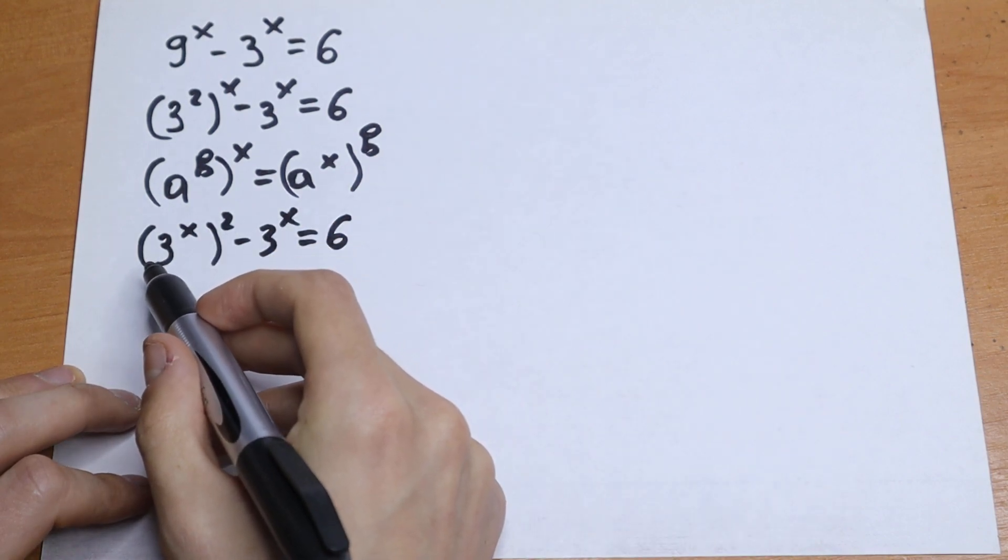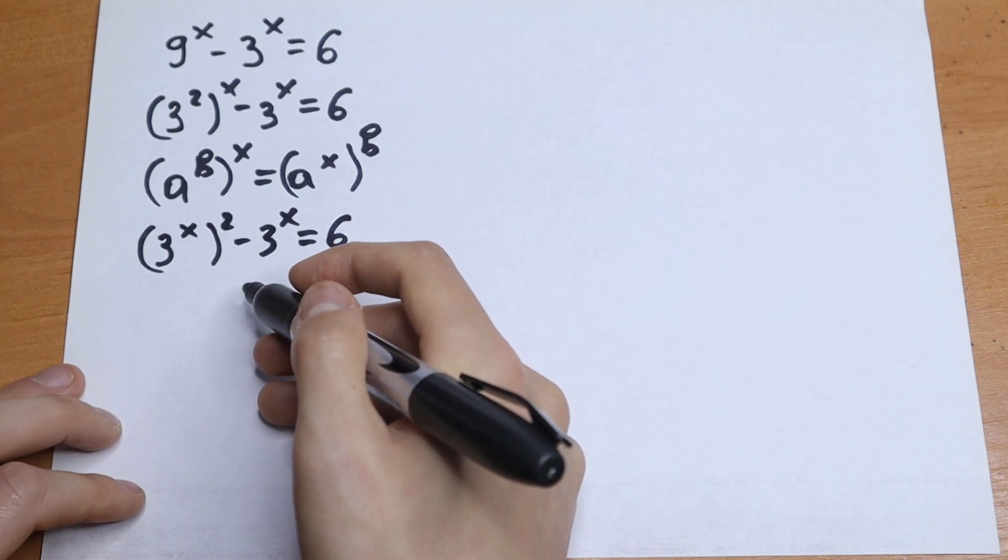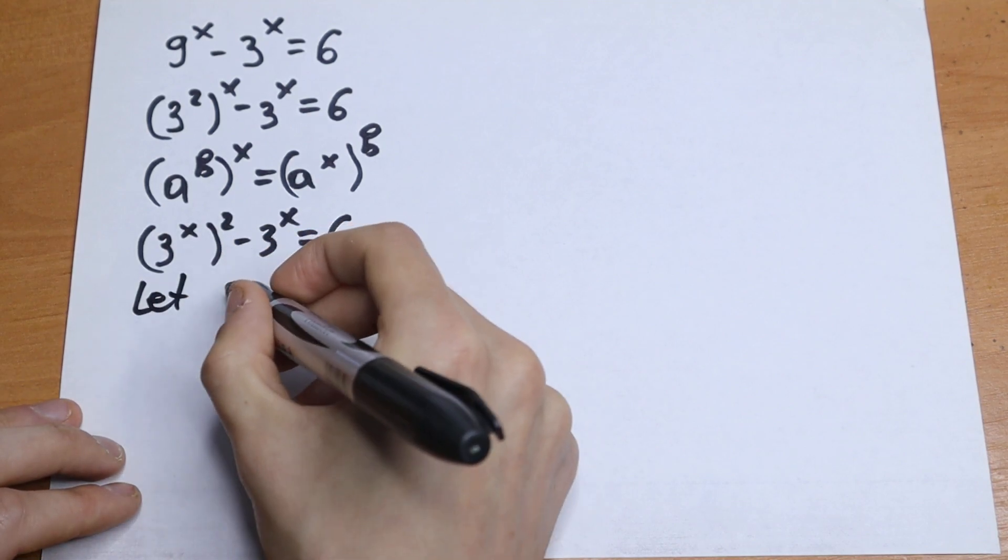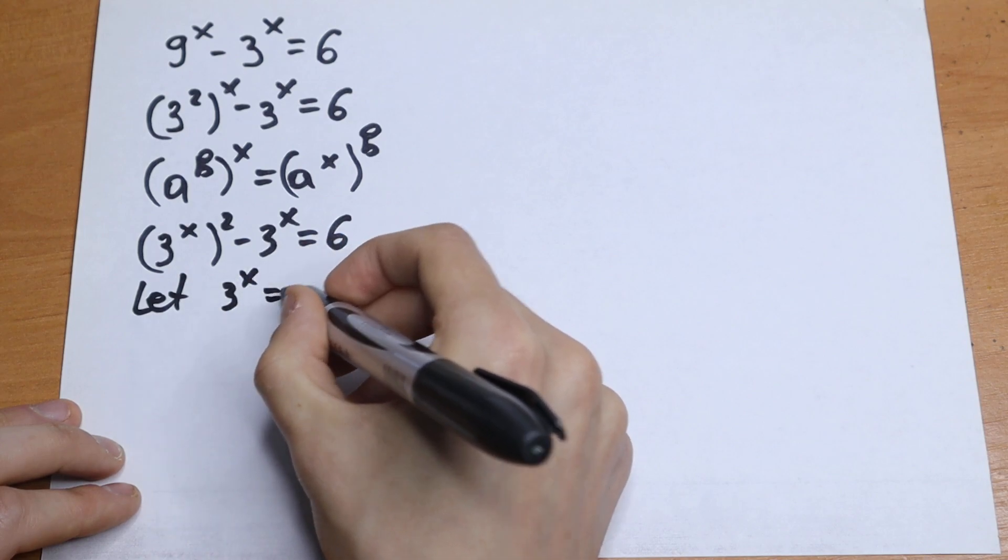We have 3 to the power x and 3 to the power x right here, so we can use a substitution. Let this 3 to the power x equal to t.